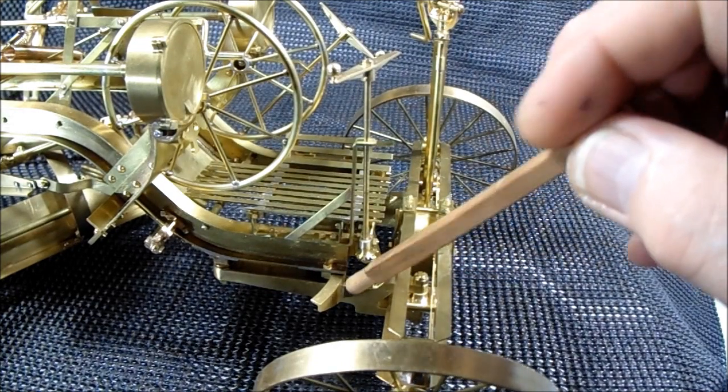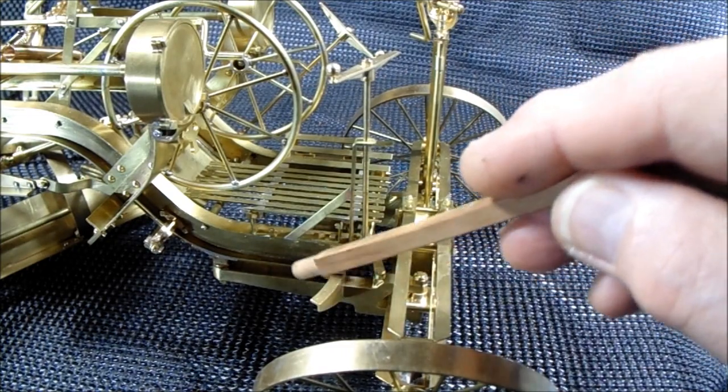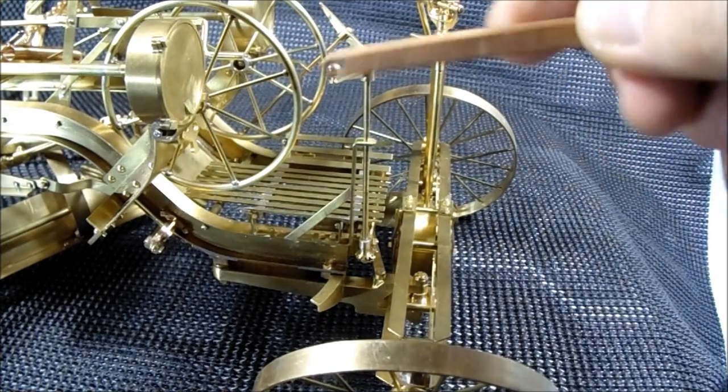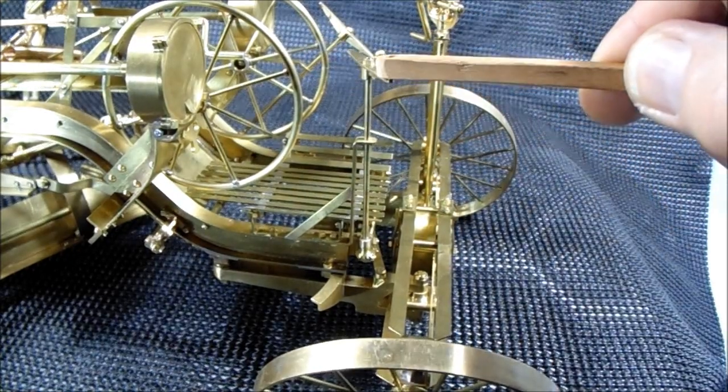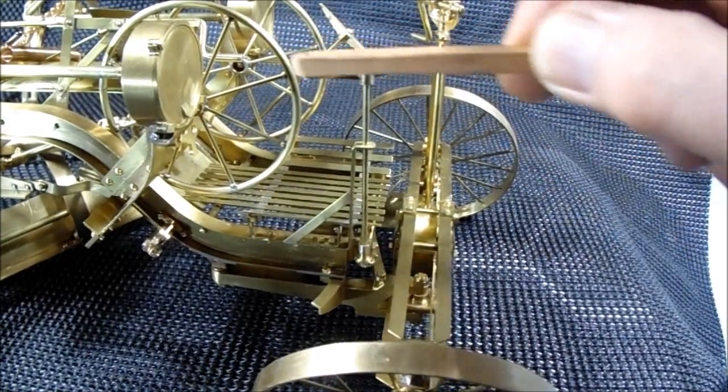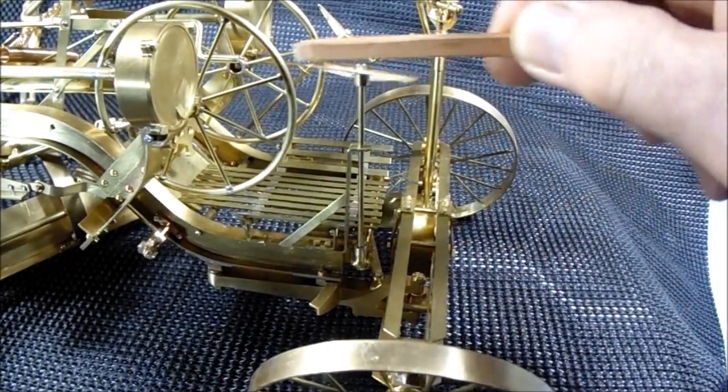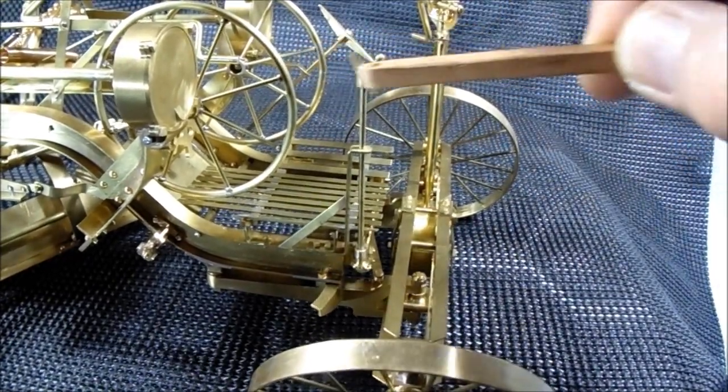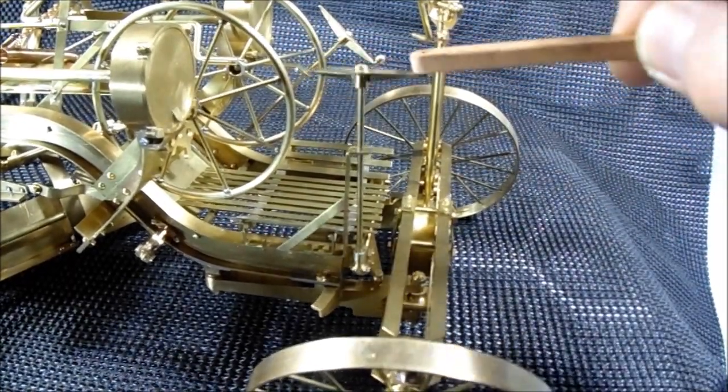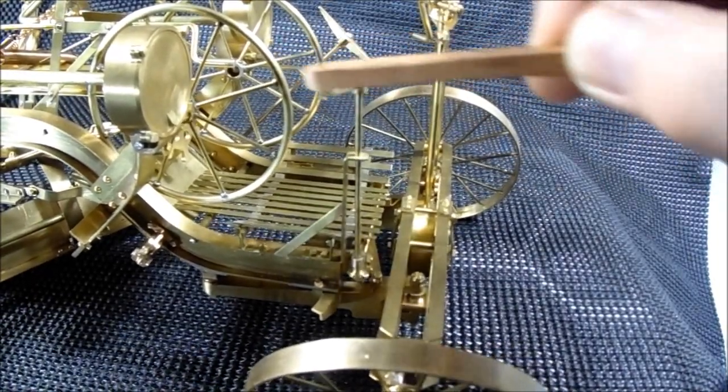If you watch this curved piece here, which is connected to this yoke, as the handle is rotated, that piece will...the frame will actually slide over that piece and offset the machine relative to the rear axle.